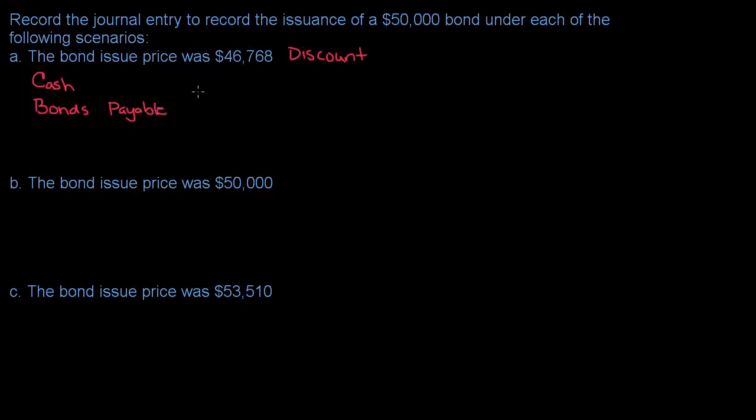So how much cash is the company receiving? Well, if the bond issue price was $46,000, that's what the company is receiving, $46,768.